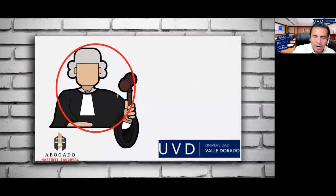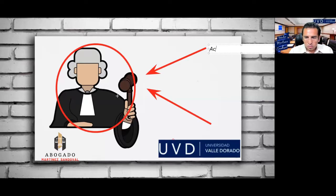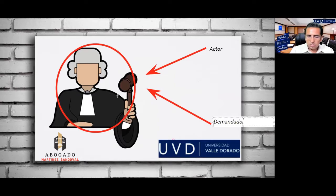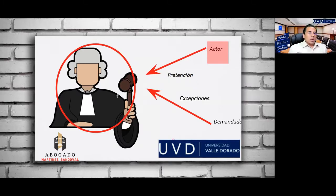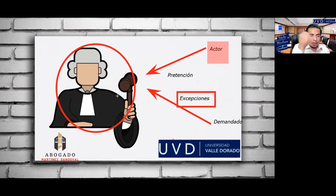El órgano jurisdiccional conoce la teoría de las partes: el actor o demandante tiene una pretensión, y el demandado opone excepciones. Pretensión del actor: no me ha pagado la renta, ha incumplido el contrato, pido que me pague la renta vencida y que desaloje el bien inmueble. Excepción del demandado: ya le pagué la renta y tengo los depósitos hechos a su cuenta bancaria.